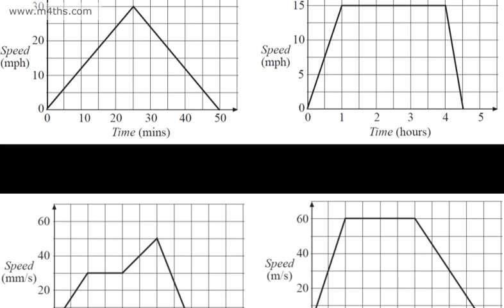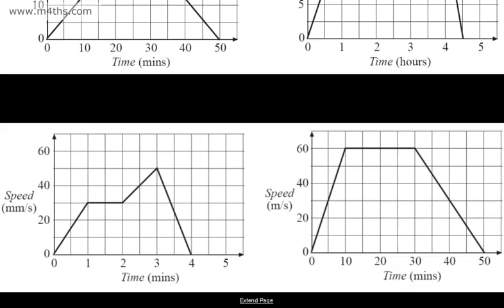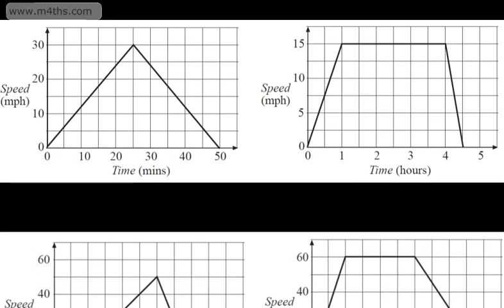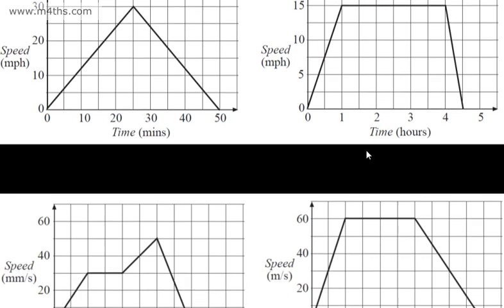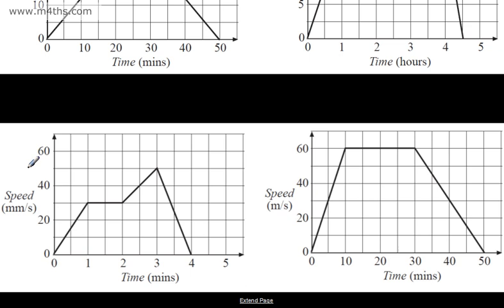Here we've got four different speed-time graphs. We have the time along the horizontal or the x-axis, and then the speed along the vertical or the y-axis. We can see speed in miles per hour and time in minutes; speed in miles per hour and time in hours; speed in millimetres per second and time in minutes; and speed in metres per second and time in minutes.